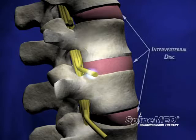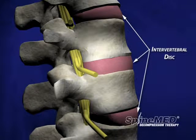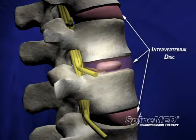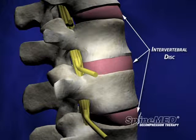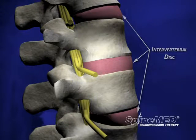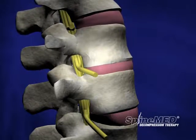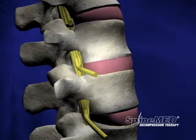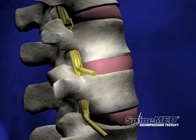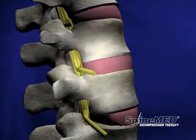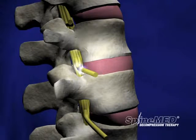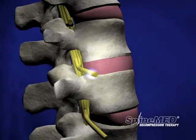Each vertebra in the spine is separated by an intervertebral disc. For simplicity's sake, the disc can be likened to a jelly donut. It has a soft, gel-like substance in the center called the nucleus propulsus, which is surrounded by a tough outer coating called the annulus fibrosus. The discs serve three primary functions: they act as shock absorbers to prevent compression fractures of the vertebrae, they provide mobility to the spine allowing it to bend and twist, and they separate the vertebrae, allowing nerve roots to branch off from the spinal cord and travel to the rest of the body.